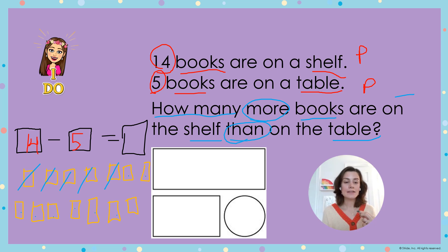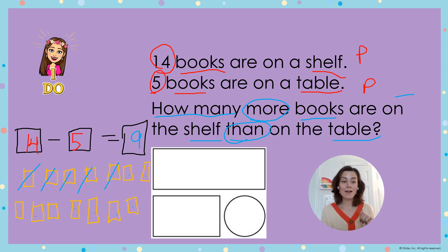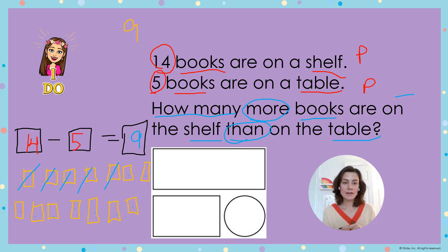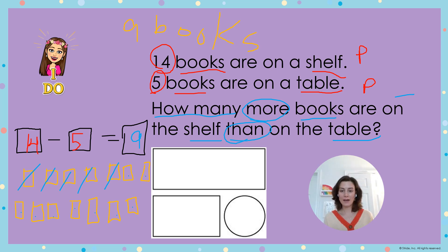Let's count how many we have left: 1, 2, 3, 4, 5, 6, 7, 8, 9. Which means 14 minus 5 equals 9. How many more books are on the shelf than on the table? 9 books. The difference between 14 and 5 is 9. Nine books!